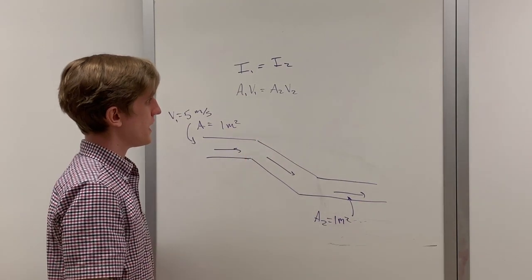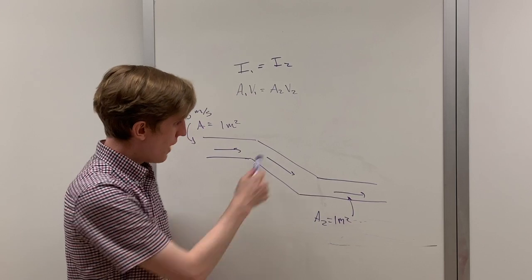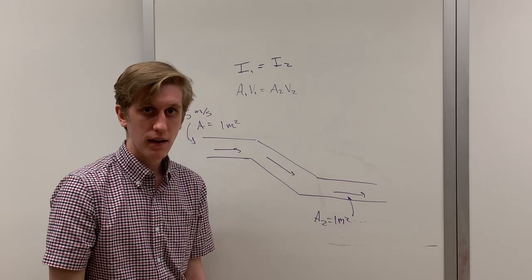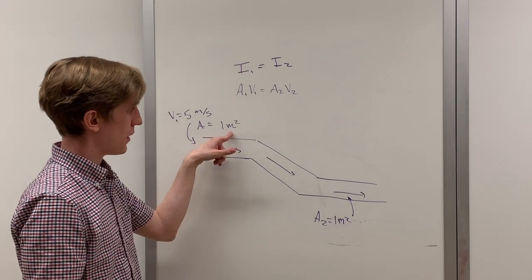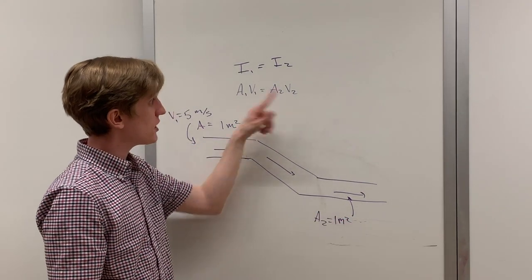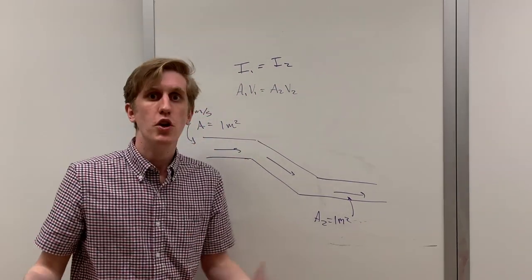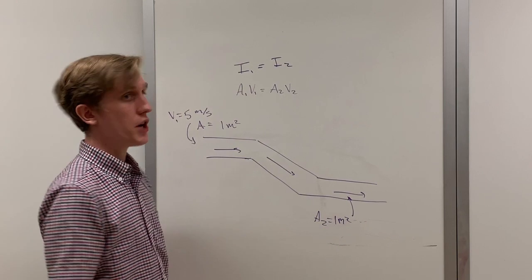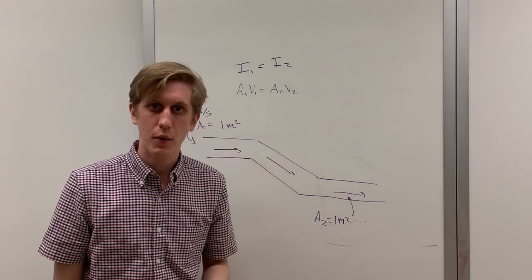Looking at the continuity equation, we say that these numbers have to be the same, no matter which part of the pipe we pay. Notice the areas are the same. One meter squared up here, and one meter squared down here. This means that the velocities must also be the same in order for this equation to be true. If the velocities were not the same, the number on the left-hand side would not equal the number on the right-hand side.